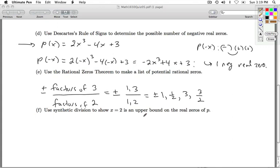Part F, we're asked to use synthetic division to show x equals 2 as an upper bound on the real zeros of P. So, I'm going to use synthetic division to start off with 2 here. And once again, my original polynomial, 2x cubed, 0x squared, minus 4x plus 3. So, I go through the synthetic division. Step 1, bring down the 2. 2 times 2 is 4. 4 plus 0 is 4. 2 times 4 is 8. 8 plus negative 4 is 4. 2 times 4 is 8. 8 plus 3 is 11.